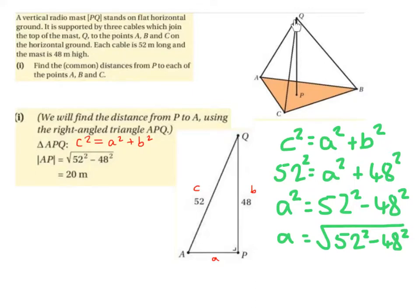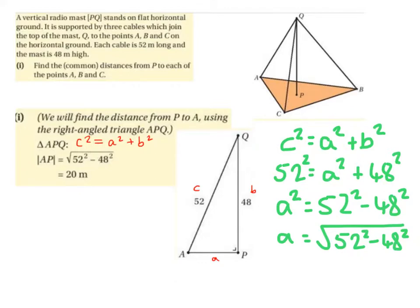This is the top of the mast Q, and this is one of the cables AQ, this is another cable QC, and another cable QB. Each cable is 52 metres long, and the mast is 48 metres high. So AQ is 52 metres, QC is 52 metres, QB is 52 metres, and QP is 48 metres.